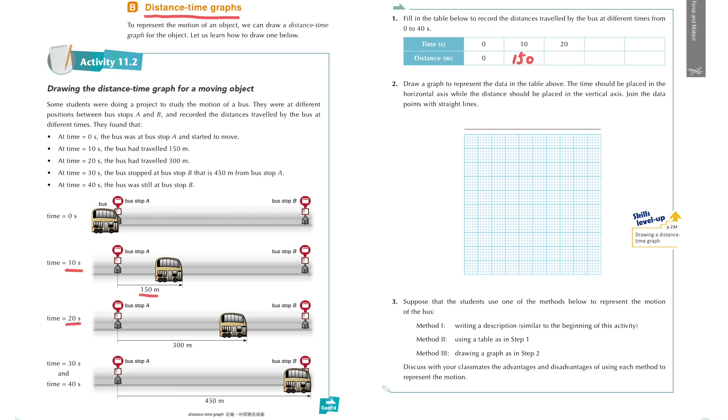And then after 20 seconds, the bus has traveled a total of 300 meters, so we can put it in the table. And then after 30 seconds, the bus is stopped at bus stop B, 450 meters away from A. So we put 450 in the table.